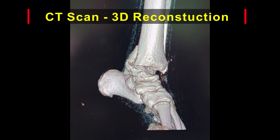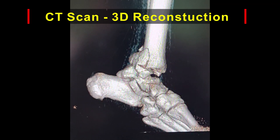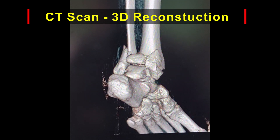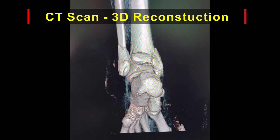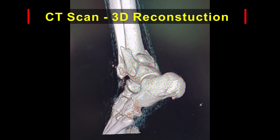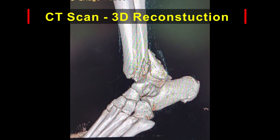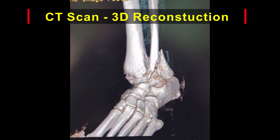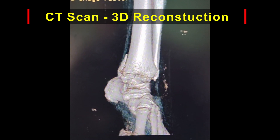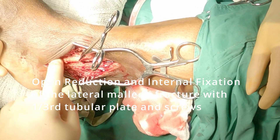This is the 3D reconstruction of the CT scan, which clearly shows the two posterior malleolar fragments involving the posterior malleolus as well as the posteromedial colliculus of the medial malleolus, including the medial malleolus with tibial plafond or the posteromedial tibial plafond with comminuted osteochondral fragments.